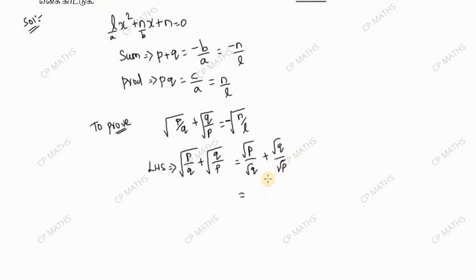Cross multiply: root p into root p, root q into root q, divided by root of pq. We need to multiply minus n by l divided by root of pq, which equals root of n by l.